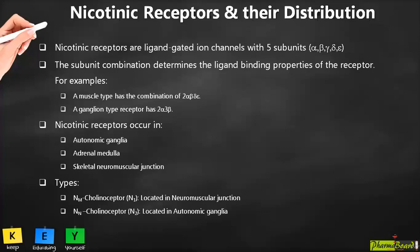Nicotinic receptors are further annotated as Nm (also called N1), located at the neuromuscular junction — representing the muscular nicotinic receptor — and Nn (also called N2), located in autonomic ganglia.